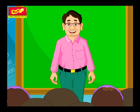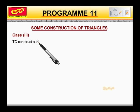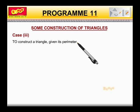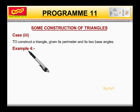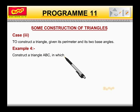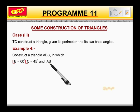Next, to construct a triangle given its perimeter and its two base angles. Example 4: Construct a triangle ABC in which angle B is equal to 60 degrees, C is equal to 45 degrees, and AB plus BC plus CA is equal to 11 centimeters.